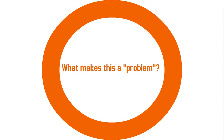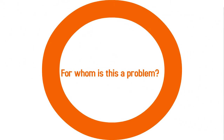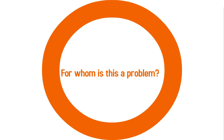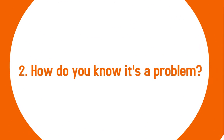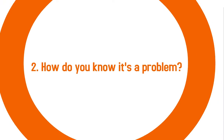What actually makes this a problem? Whatever it is that you're wanting to address, what makes it a problem? Then you answer the question: for whom is this a problem? You want your research proposal to be very specific to the problem you're addressing, the setting you're addressing it in, and the particular participants — for example, in a specific school or classroom you're working in. For whom is this a problem?